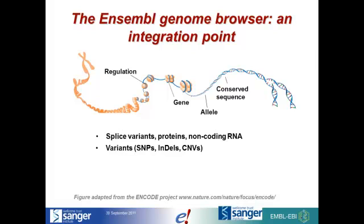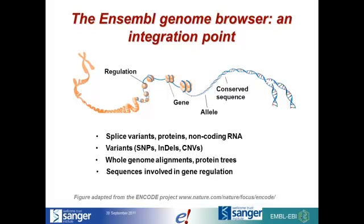You can look at sequence variation — short sequence variation like SNPs or indels (insertion deletions) — or maybe structural variation like copy number variation. You might want to look at whole genome alignments or a protein tree. Maybe you're interested in gene regulation, and we have some information that can point to those sequences. And finally, you might have your own data that you want to view compared with the rest of this information.